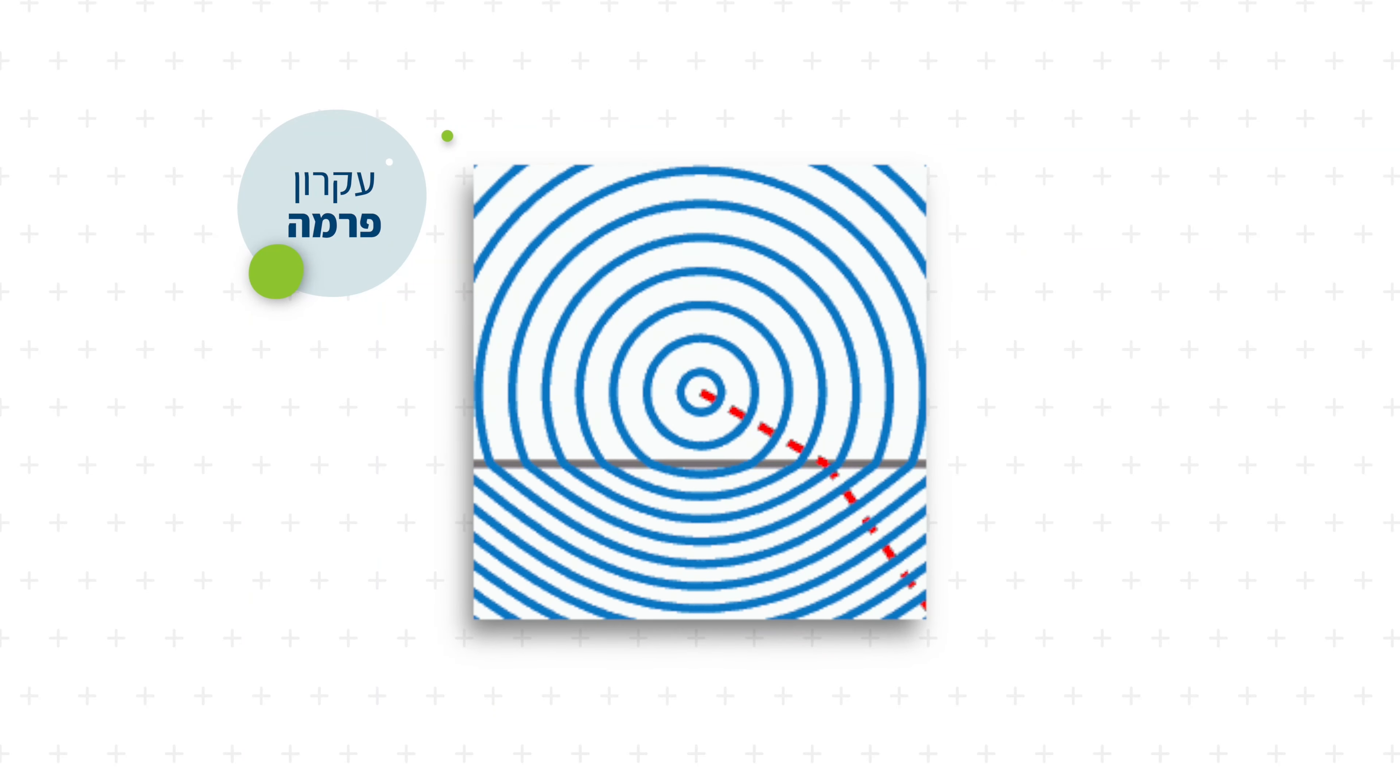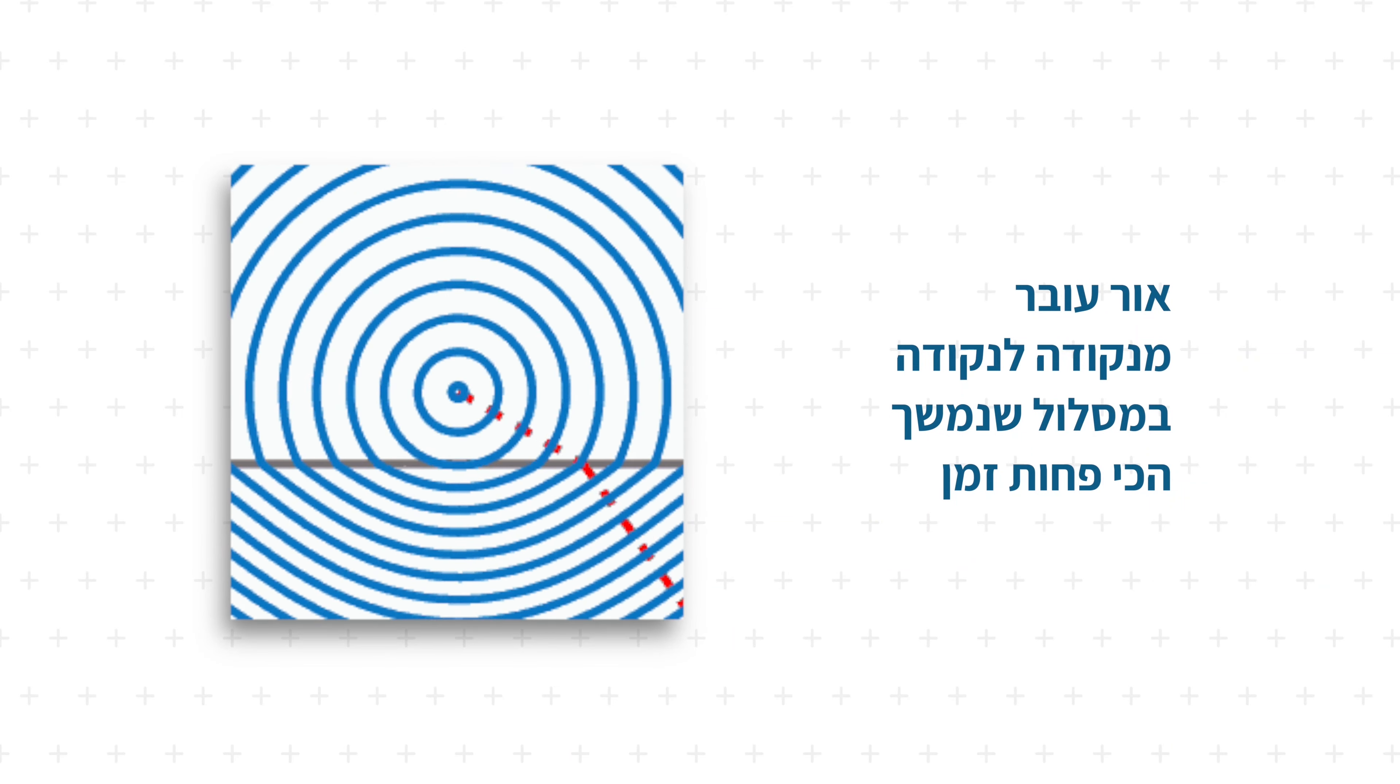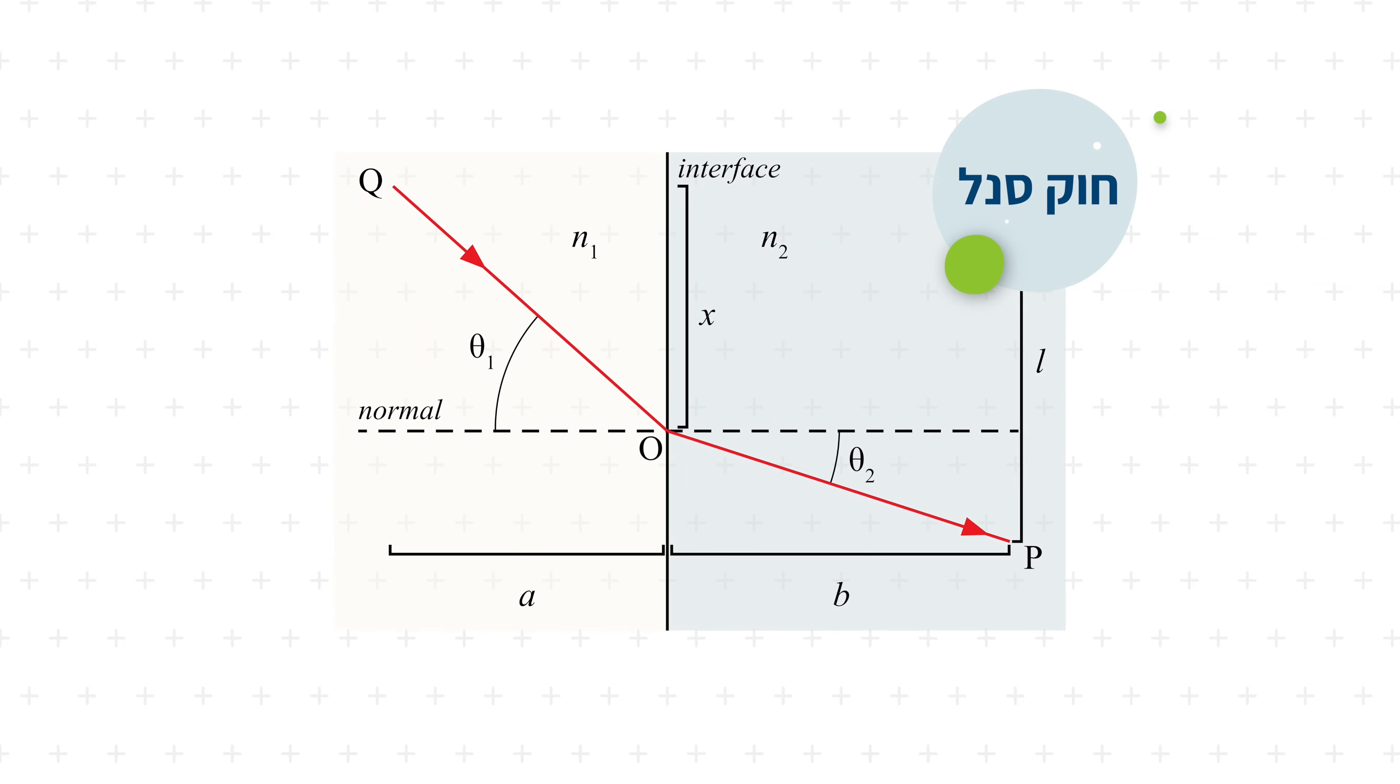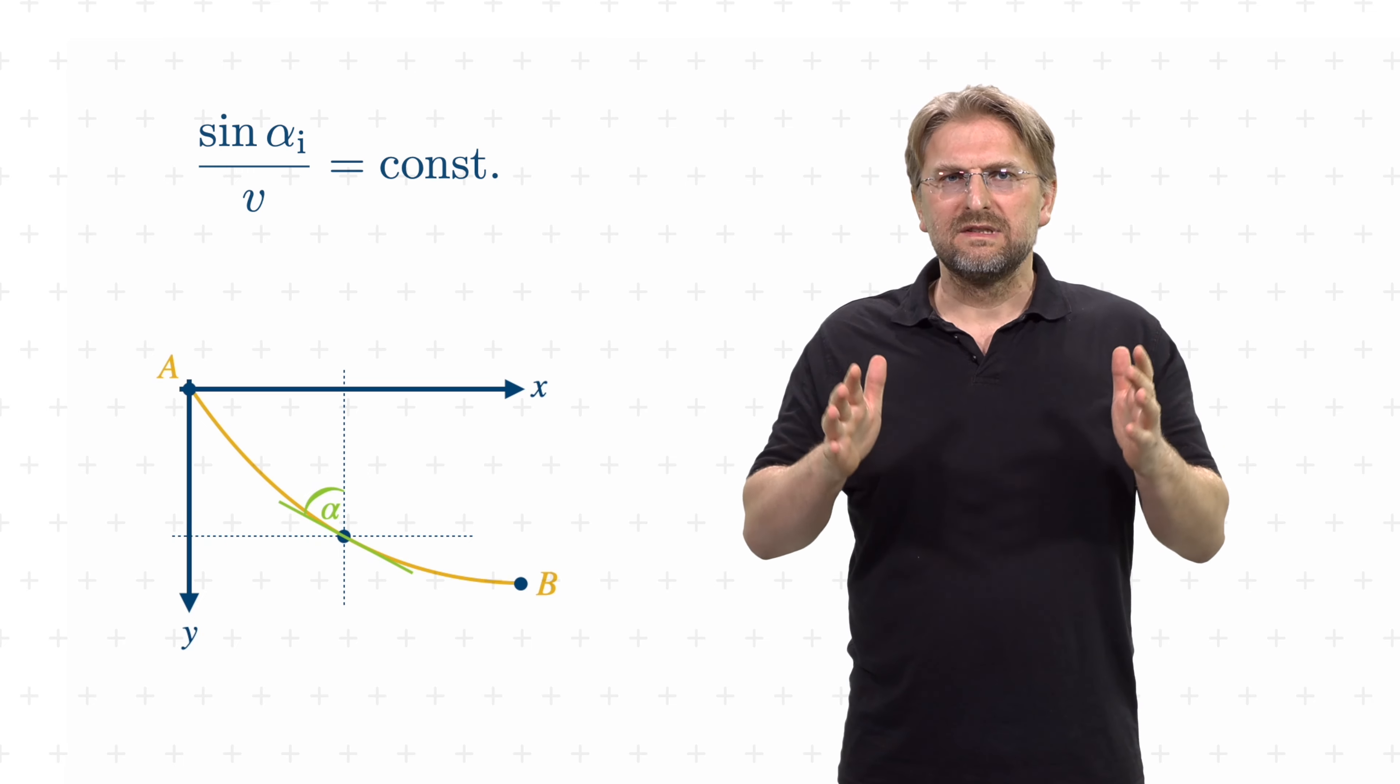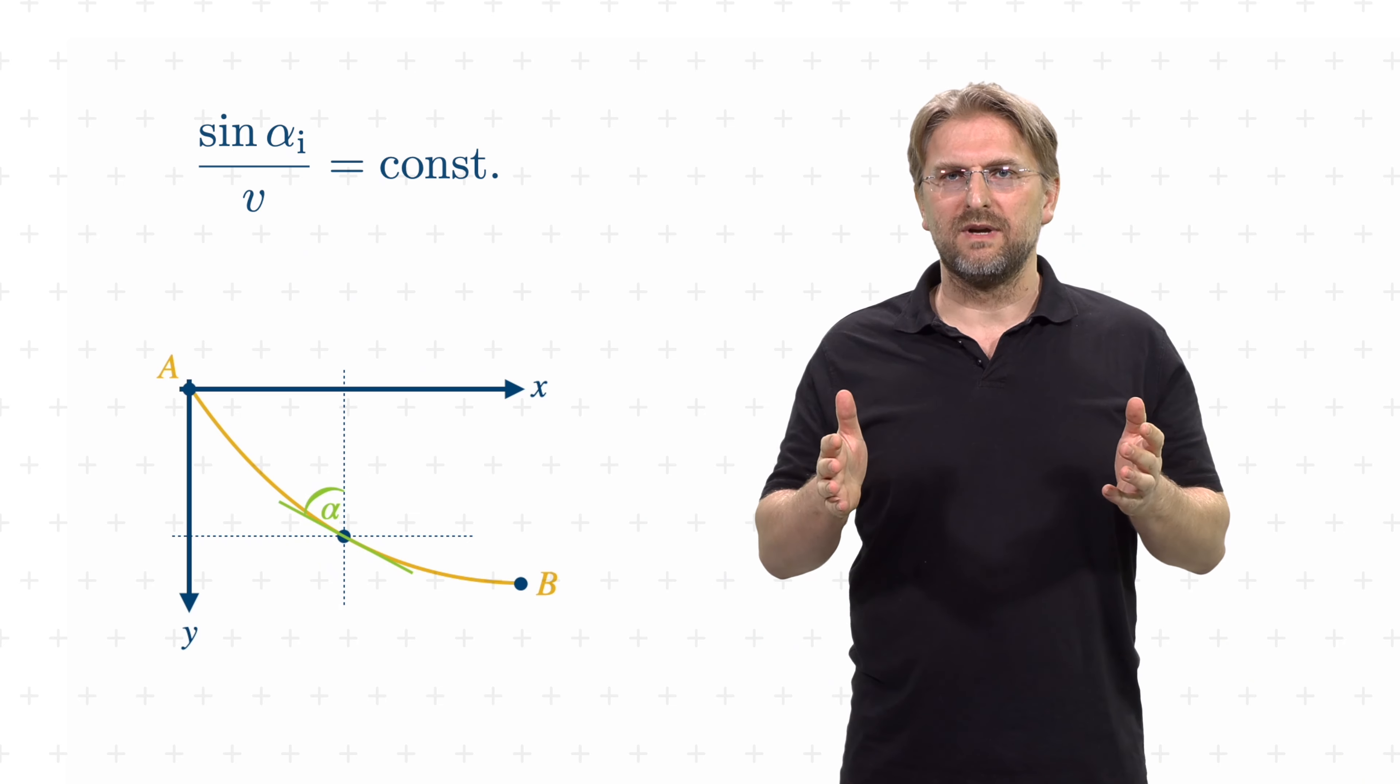He brilliantly utilized an analogy to optics known as Fermat's principle. According to this, light always takes the path that allows it to travel from one given point to another in the shortest time possible. So, light travels on a brachistochrone. Fermat's principle leads to Snell's law of refraction that you know from optics. The sine of the angle of incidence divided by the velocity in this medium is constant. We will use this now for our brachistochrone problem and obtain the velocity through the conservation of energy.